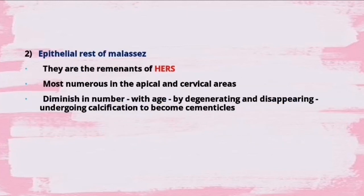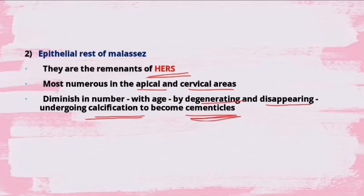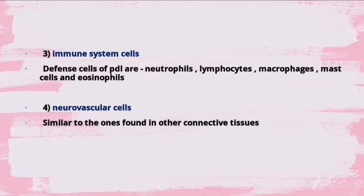The second type is the epithelial rests of Malassez - remnants of Hertwig's epithelial root sheath. They are most numerous in the apical and cervical areas and diminish in number with age. As you age, they either degenerate, disappear, or undergo calcification to become cementacles.